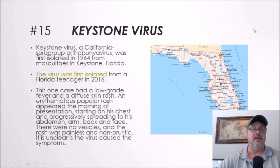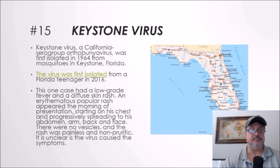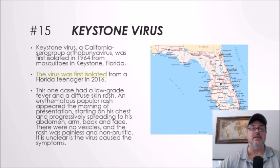Number fifteen: Keystone virus. Keystone virus is a California serogroup orthobunya virus, first isolated in 1964 from mosquitoes in Keystone, Florida. In 2016, the first human case was identified in a teenager in Florida. This case had a low-grade fever and a diffuse skin rash that started on the chest and progressively spread to the abdomen, arms, back, and face. The rash was painless and non-pruritic. It is unclear if the virus caused the symptoms, and there are still many unknowns about Keystone's pathology in humans, since there has been only one documented case.